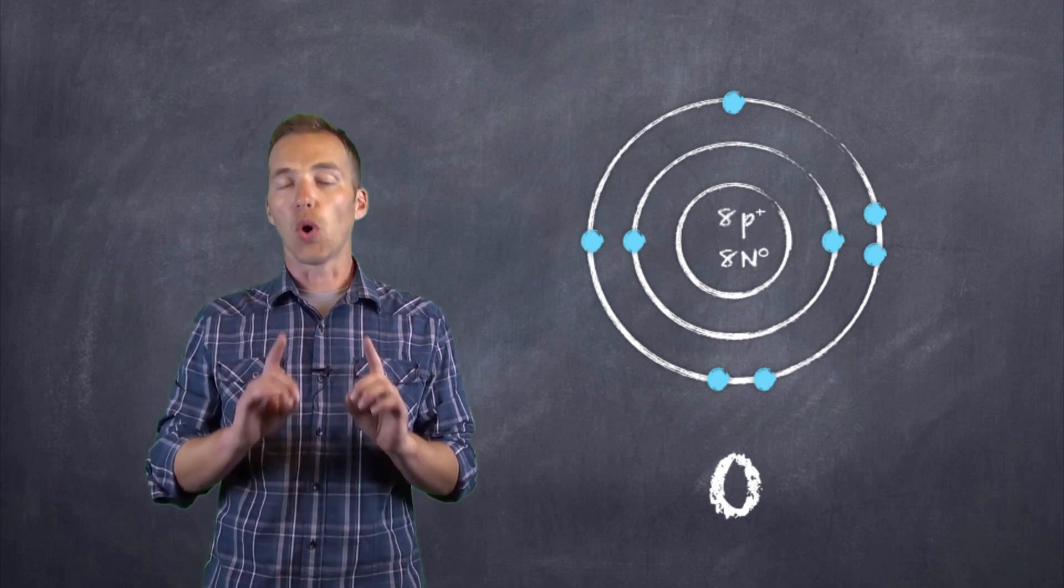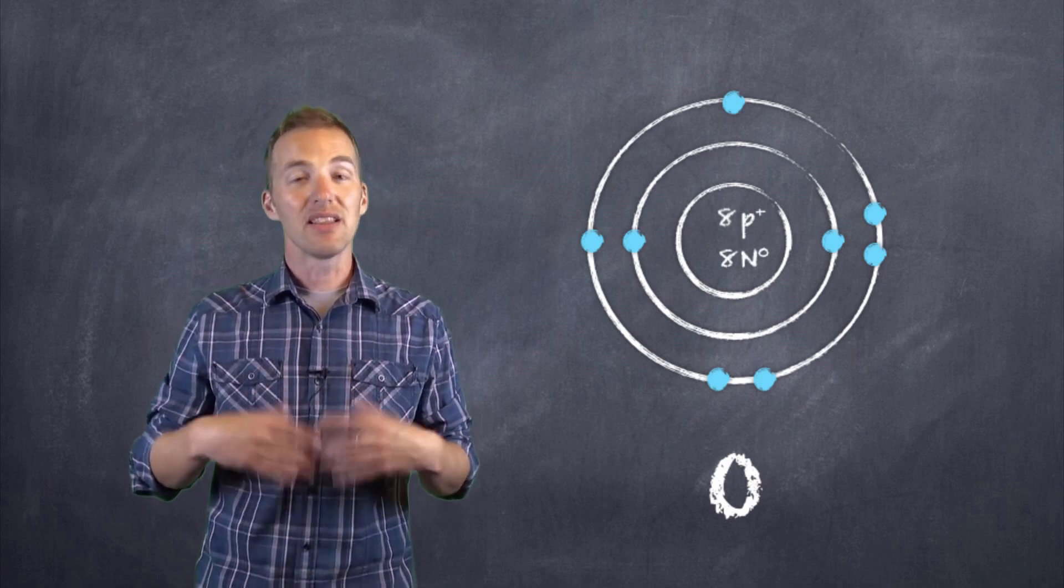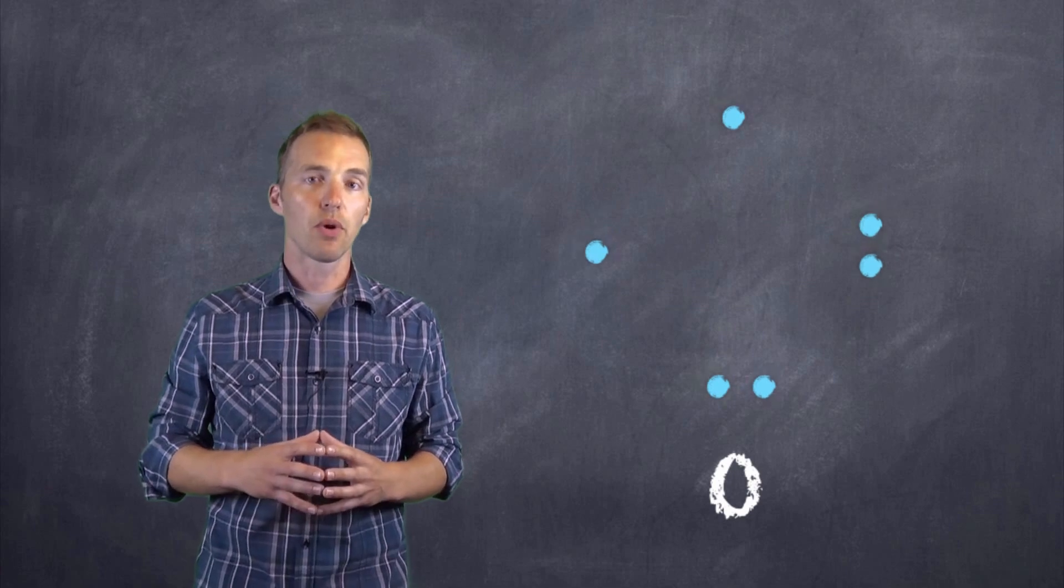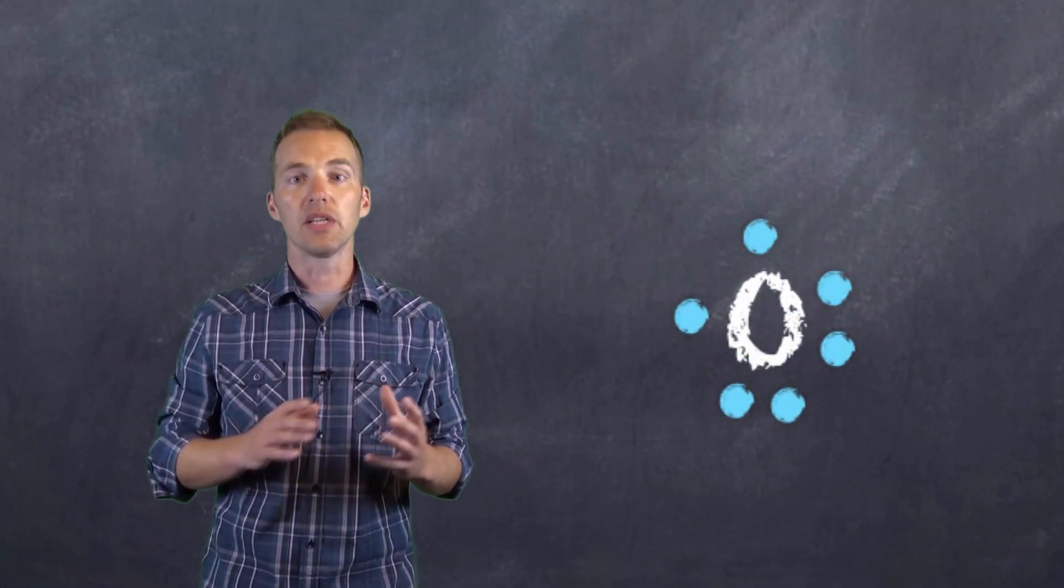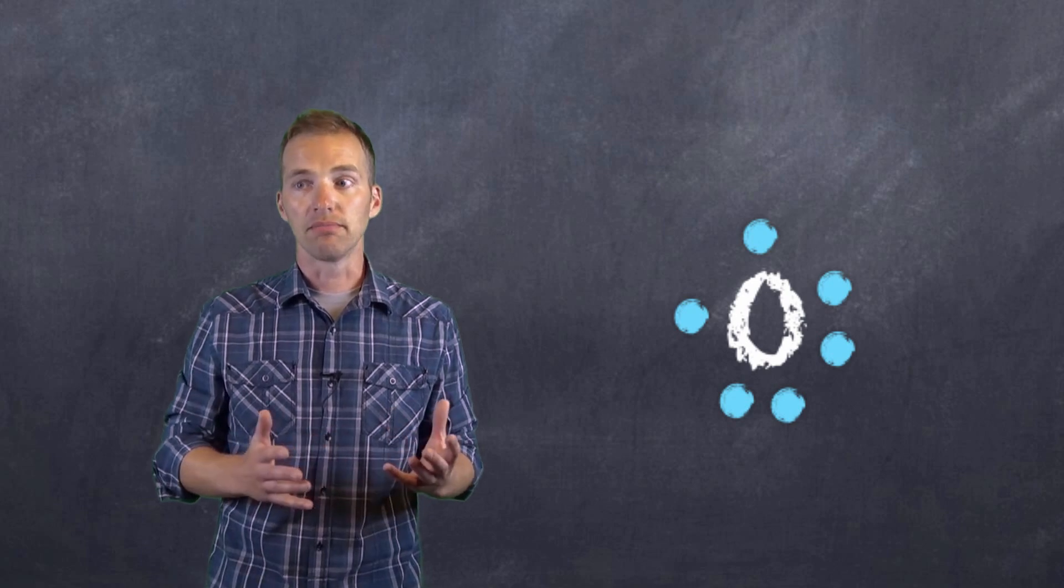Then around oxygen, we're going to arrange only the valence electrons in the same sort of pattern that we did with that Bohr-Rutherford diagram. First, we put one at each one of the four poles, and then we can start pairing them up. And that's it.